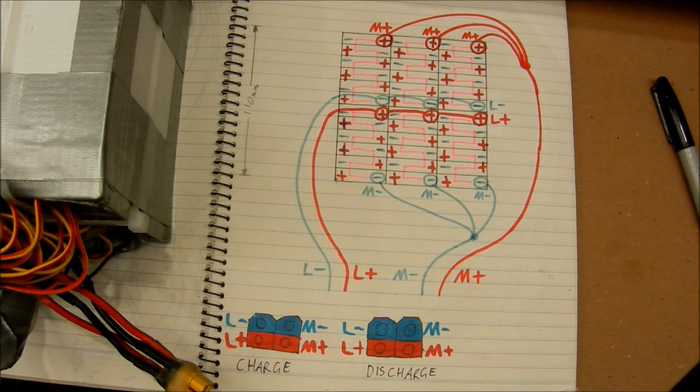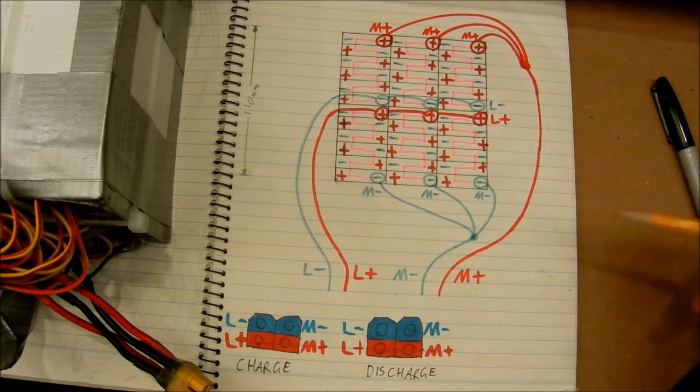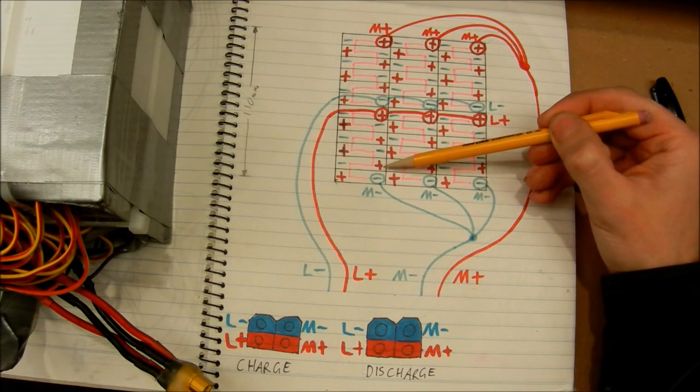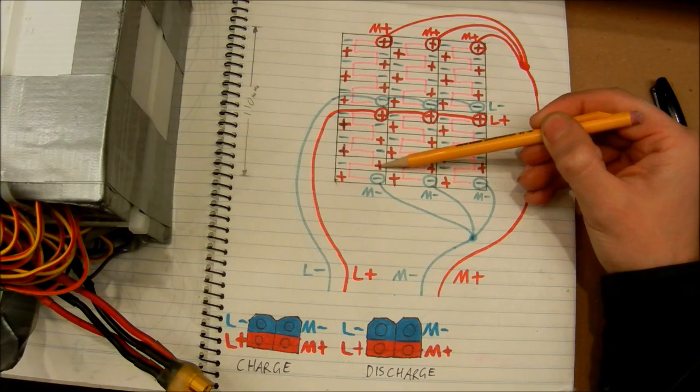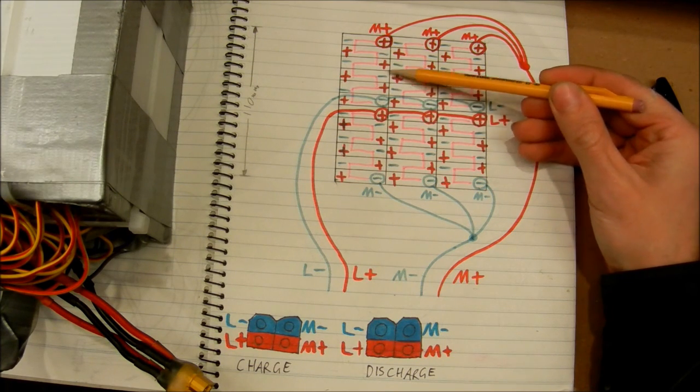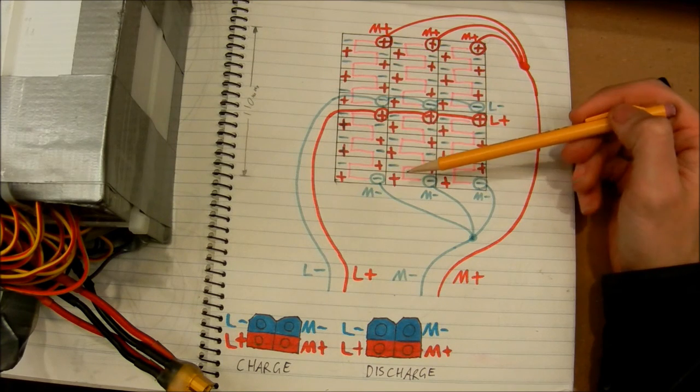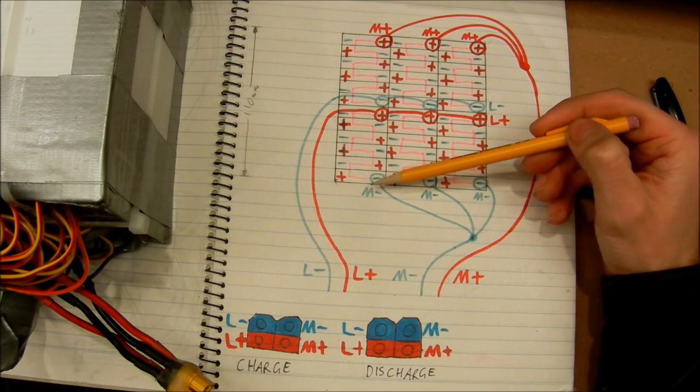Okay, so this is basically how my battery is all connected together. Each of these rectangles is one LiPo cell, and as you can see, I have 12 cells in series. At 4 volts each equals 48 volts.